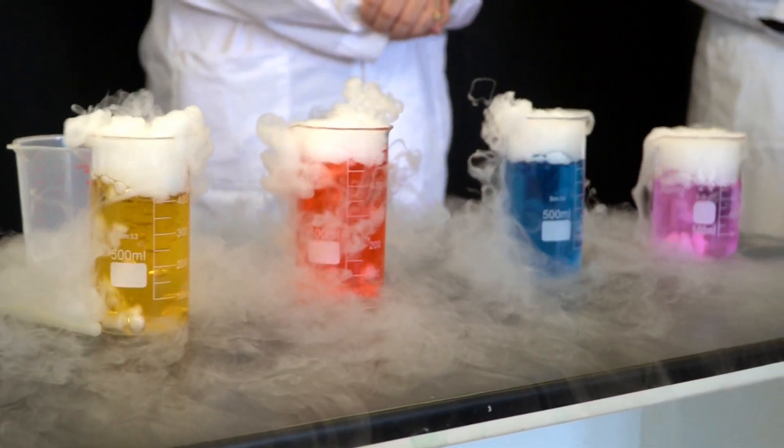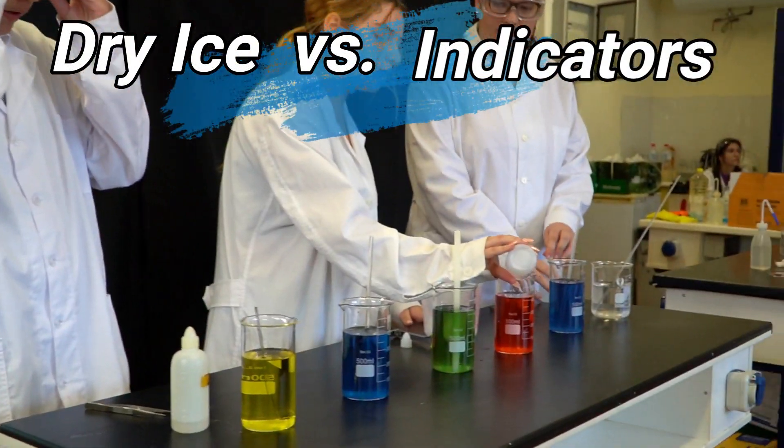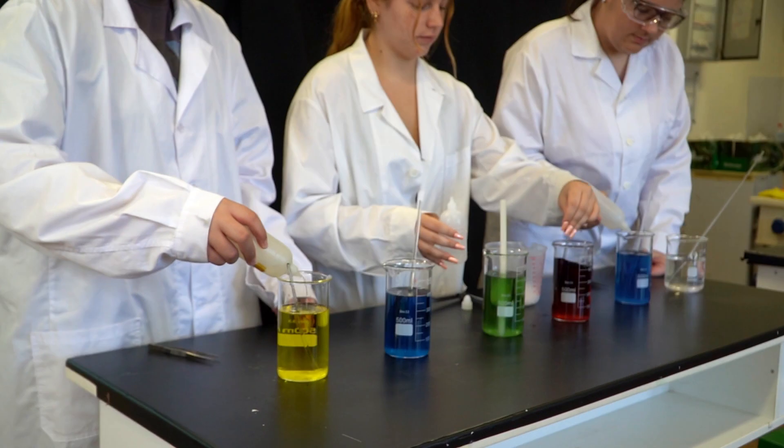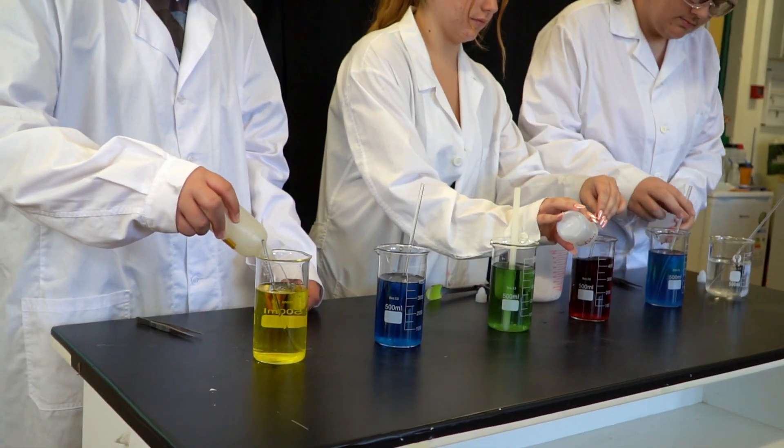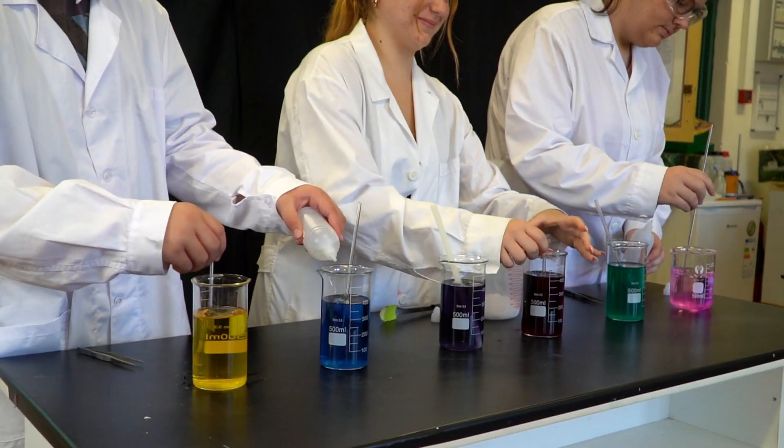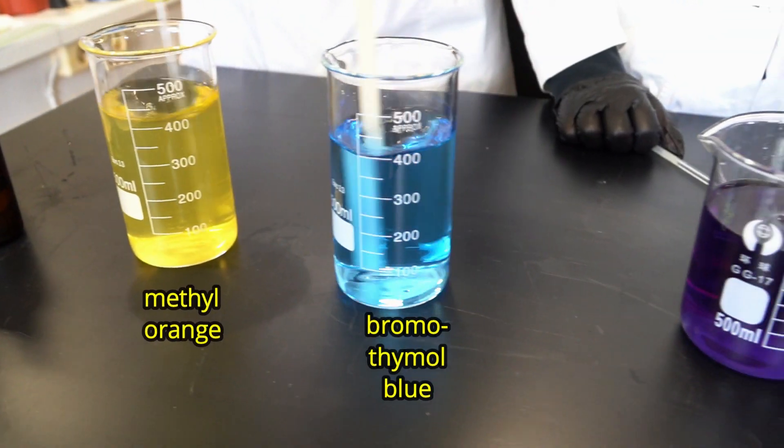pH indicators are water-soluble substances that change color according to how much basic or acidic the solution becomes. In that particular experiment we prepared alkaline solutions of six different indicators and followed the color changes while pH decreases slowly.